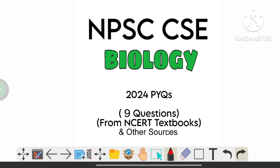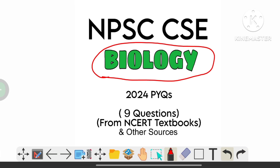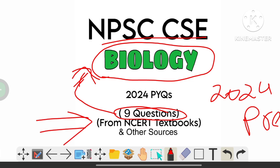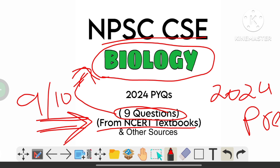In this video we will learn some previous year biology questions from the UPSC CSE 2024 prelims. There will be a total of nine questions from the biology section, and most of the sources are from the NCERT textbook class 9 and 10. Let's start with the first question.